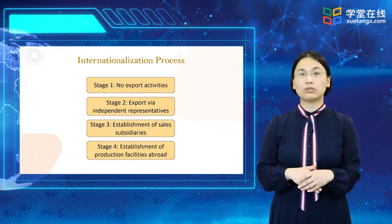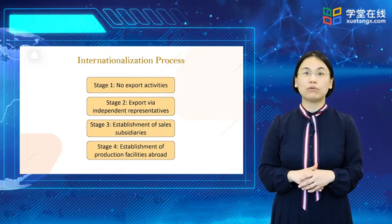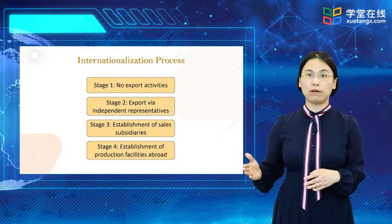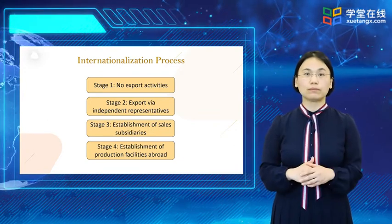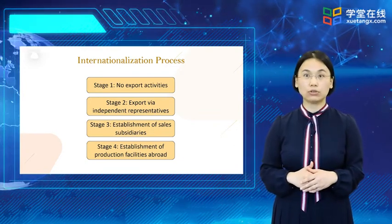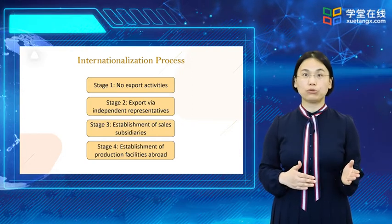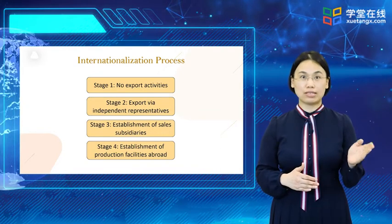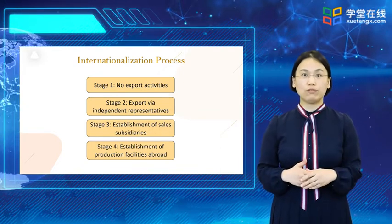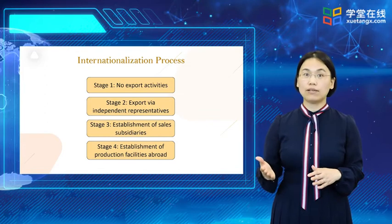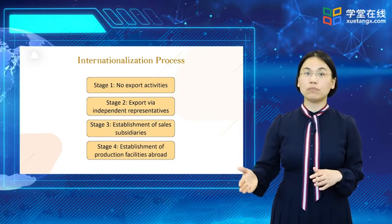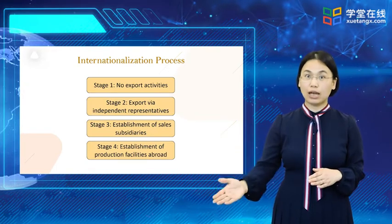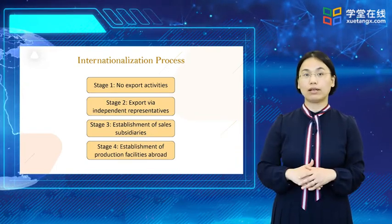Next, to manage subsidiaries, the company replaces the export department with an international department or division. If markets are large and stable, or the host country requires local production, the company will locate production facilities there. By this time, the firm is operating as a multinational and optimizing its sourcing, financing, manufacturing, and marketing as a global organization.